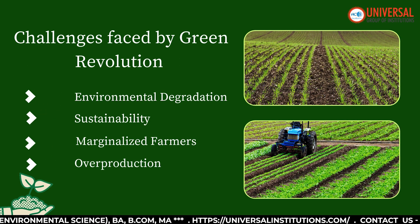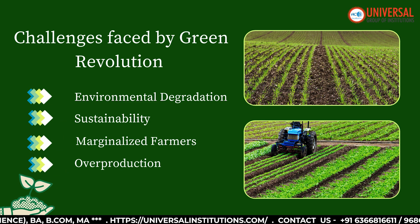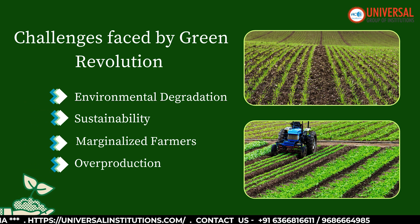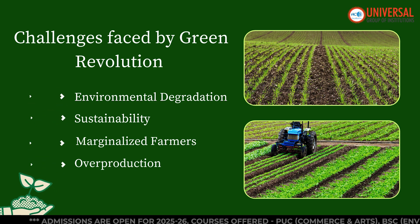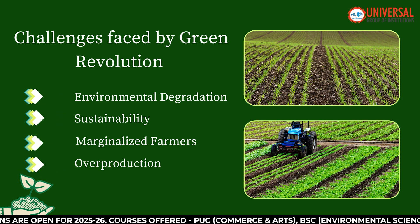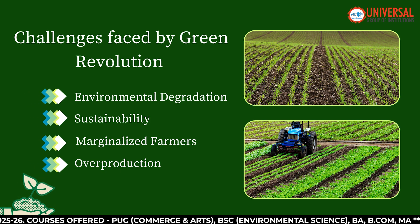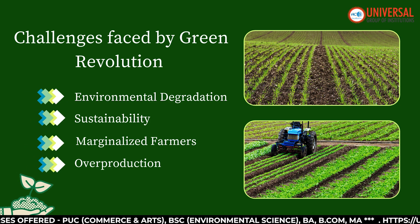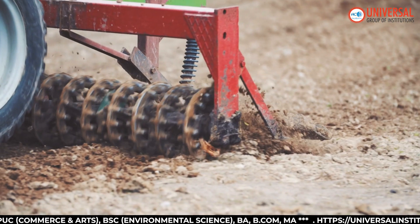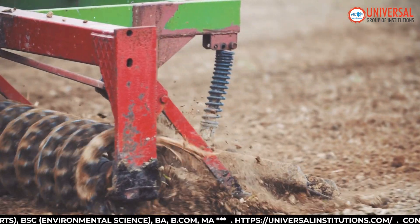The Green Revolution also faced several challenges. Majorly, environmental degradation — including soil fertility loss, salinization, and water logging due to intensive farming. Over-reliance on chemical inputs led to natural resource depletion. Small and marginal farmers struggled to afford HYV seeds, fertilizers, and machinery. Additionally, surplus grains led to storage and distribution issues.